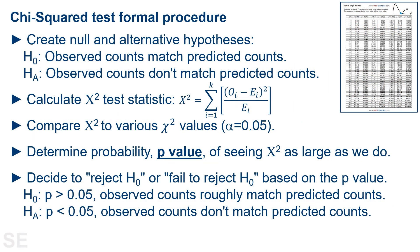First, a quick review of the chi-squared approach in general. You can check out our introduction to the chi-squared video on this channel if this is new to you. The first step is to create the null and alternative hypotheses for the analysis. The null hypothesis will be that the observed counts match the predicted counts. The alternative hypothesis will be that the observed counts don't match the predicted counts. Then we calculate a chi-squared test statistic using the observed count data and a mathematical model which makes predictions for what the count values are expected to be.